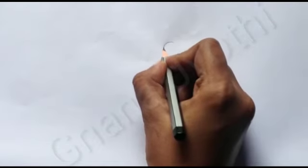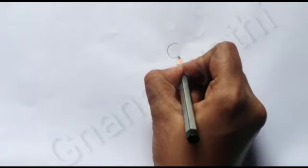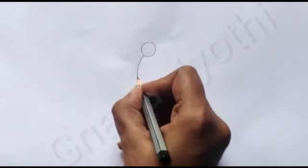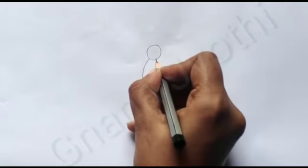First of all, draw a small circle and draw a long oval shape for its body.